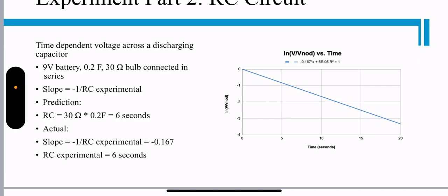This is a graph on the right of that. Time dependent voltage across the discharge capacitor, 9 volt battery, 0.2 farads, 30 ohm bulb connected to a series. Slope is negative 1 over RC.